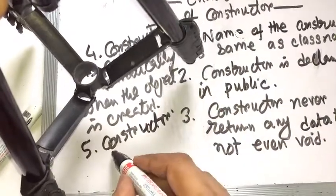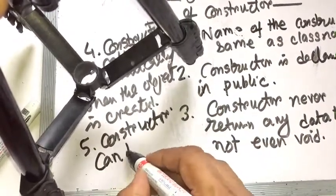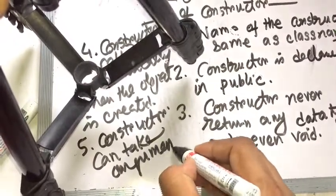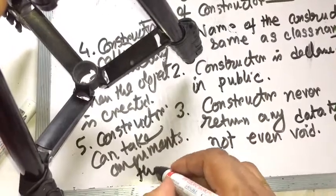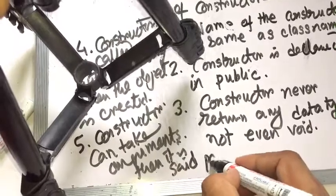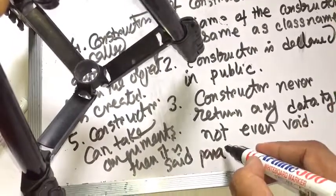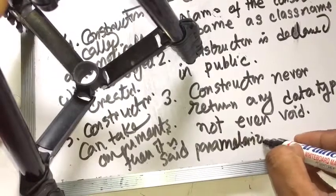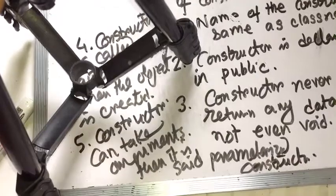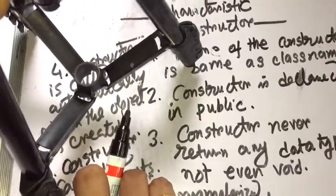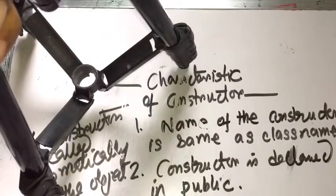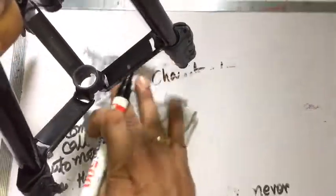Constructor can take arguments — then it is called a parameterized constructor. So these are the features or characteristics of constructor.